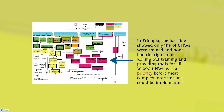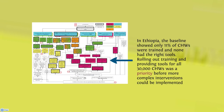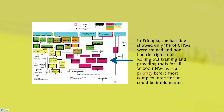Supply chain training and tools are important building blocks for causal pathways leading to three of the five preconditions. In Ethiopia, the baseline showed only 11% of CHWs were trained and none had the right tools. Rolling out training and providing tools for all 30,000 CHWs was a priority before more complex interventions could be implemented. The theory of change serves as both a technical and monitoring and evaluation framework for SC4CCM, enabling the project to successfully use data to design interventions. Information is used efficiently in more than one way, since indicators are the same for both technical and monitoring and evaluation activities.